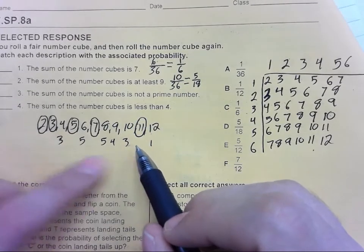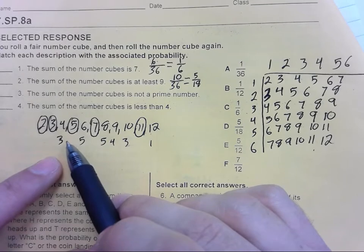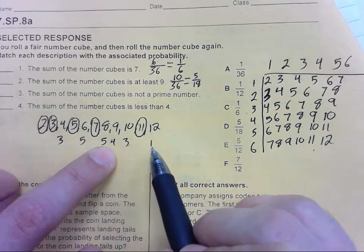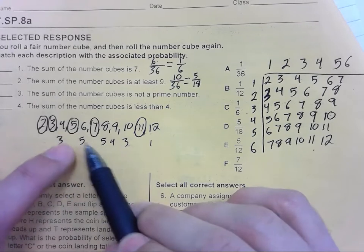Well, 5 and 5 is 10. 3 and 3 is 6, plus 4 is 10.